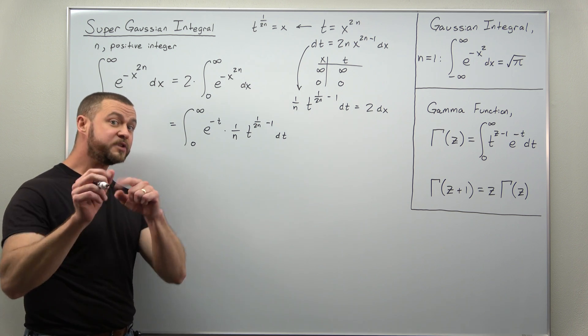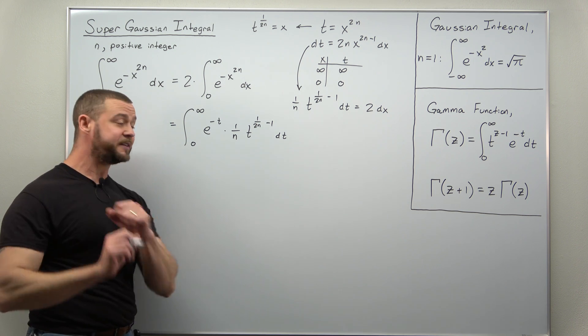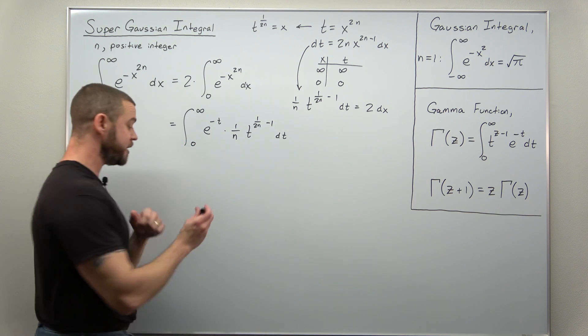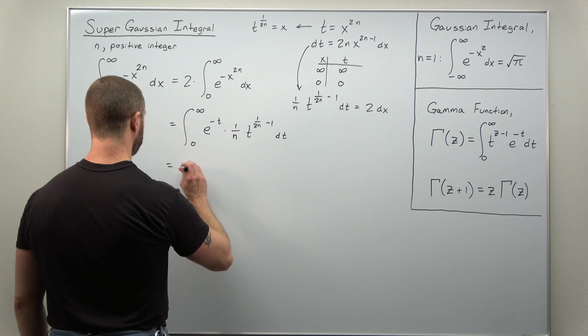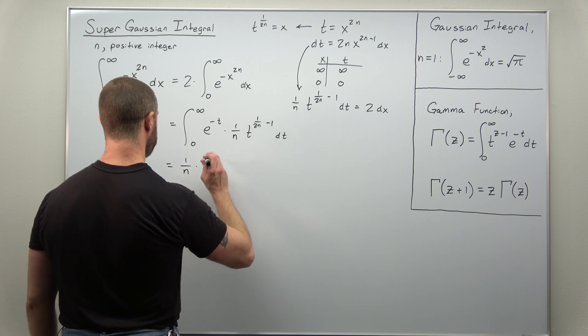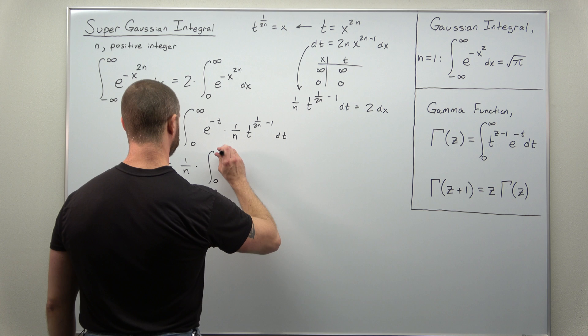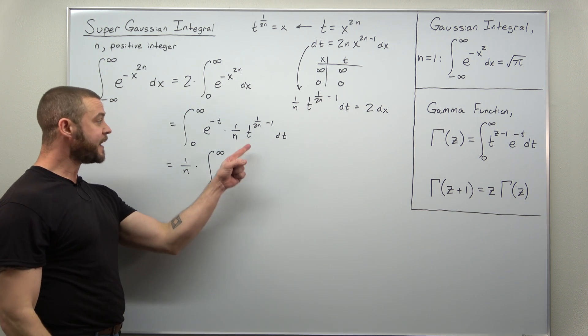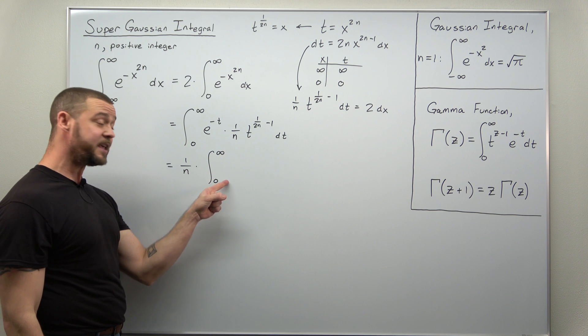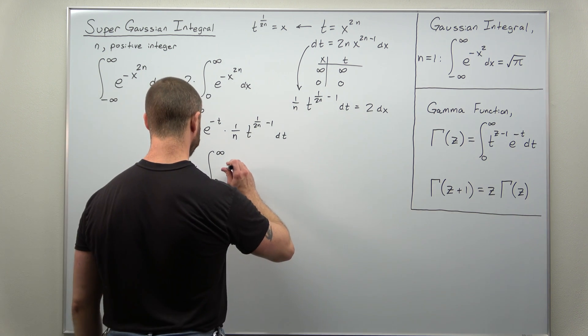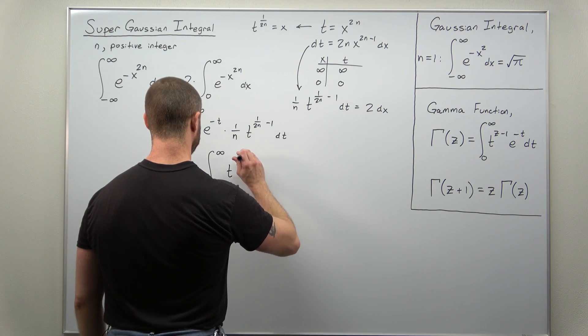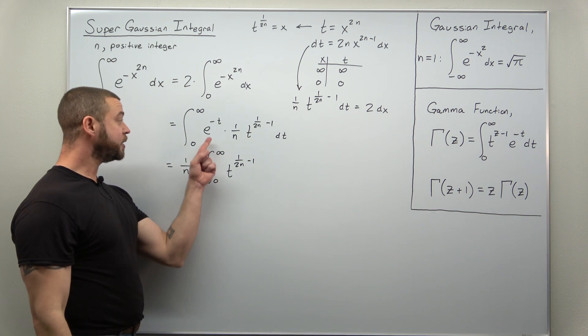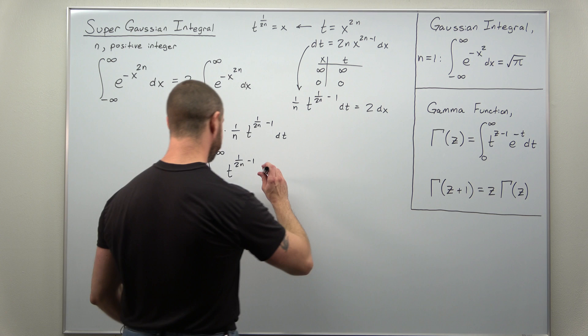We're going to notice that we're integrating with respect to t, which means I can take this factor of 1 over n out front. So we'll write this as 1 over n times our integral from 0 to infinity. And I'm going to rearrange some of the factors here. I'm going to take the power of t and write that first. And that's now multiplying the exponential e to the negative t.